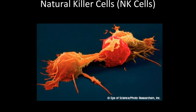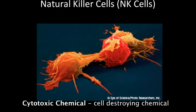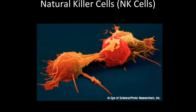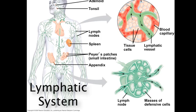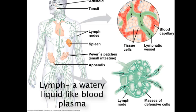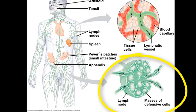Natural killer cells, also known as NK cells, also circulate through the body and can detect abnormal surface proteins on cells infected with a virus or cancer cells. NK cells don't phagocytize the infected cell but rather secrete cytotoxic chemicals that trigger the infected cell to destroy itself, saving other cells from being infected. Many cellular innate defenses involve the lymphatic system, a network of vessels and nodes that distribute lymph through the body. Lymph is a watery liquid very much like blood plasma. Some macrophages reside in structures called lymph nodes where they engulf pathogens that have flowed from the interstitial fluid into the lymph.